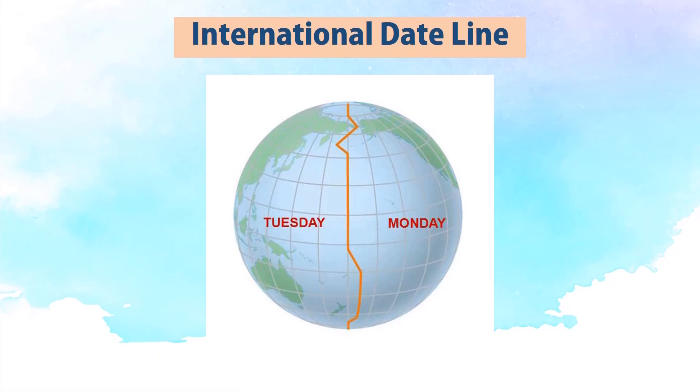However, if a ship comes from east to west, they lose a day. Thus, from Tuesday, they will adjust the day back to Monday.